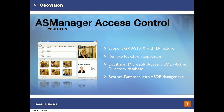AS Manager also supports the GV-AS1010 reader which has built-in tier functions. We also have a remote lockdown application where users can lock down all doors in case of emergencies. AS Manager supports three types of databases: Microsoft Access, SQL Database, and Windows Active Directory. In case of database corruption, users can use ASDB Manager — found inside the access control folder — to restore or repair their database.